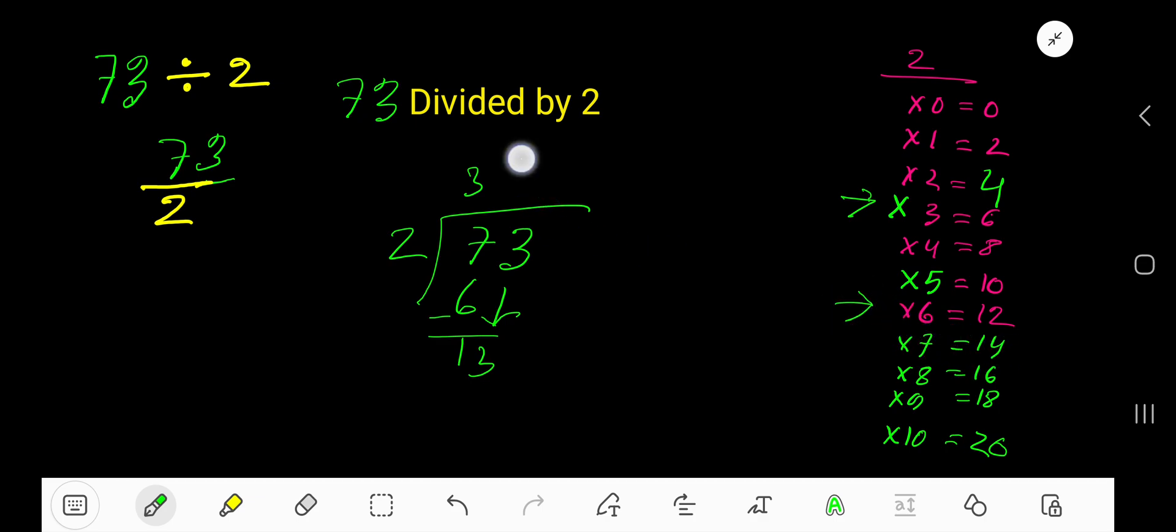6 times 2 is 12. Subtract, we get 1. So this is your remainder. 36 remainder 1 is your answer. But if you want to write your answer in decimal form, just convert this whole number into a decimal.